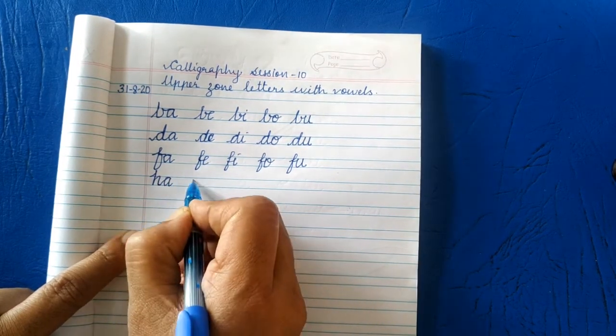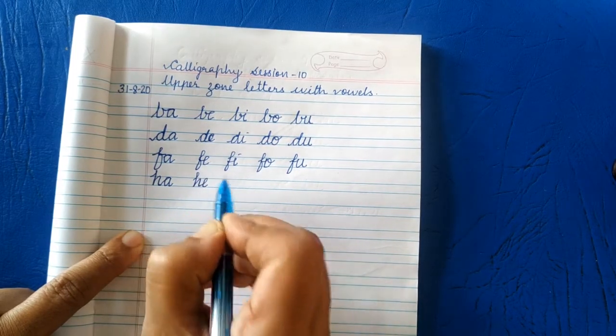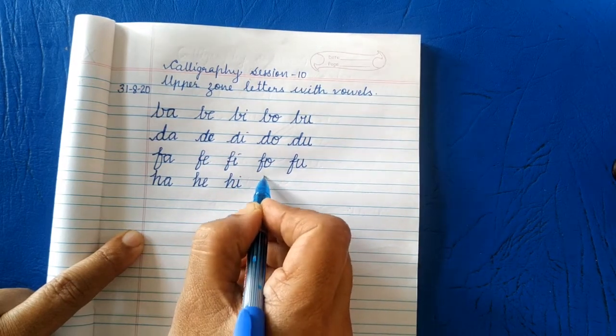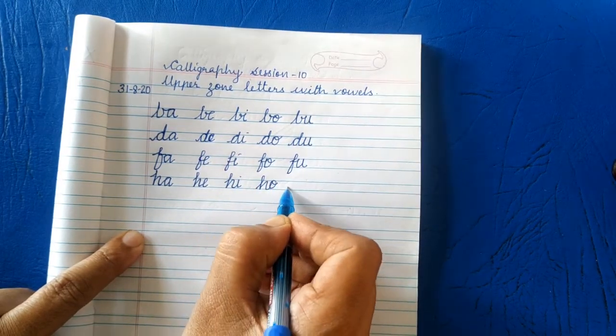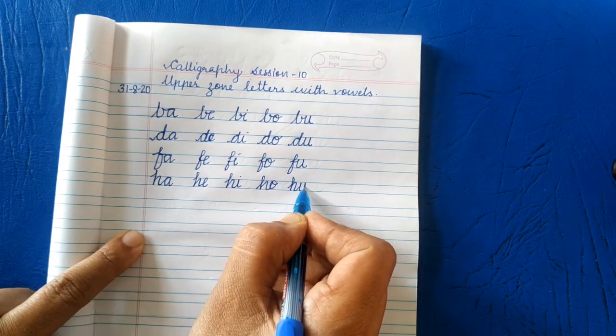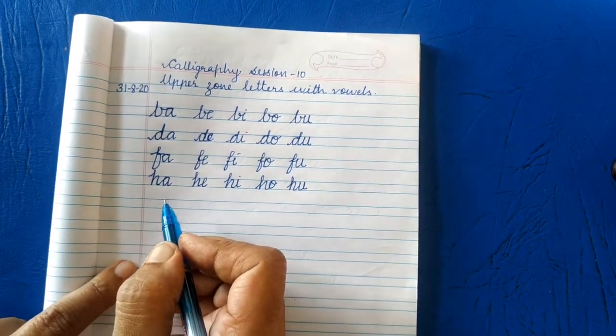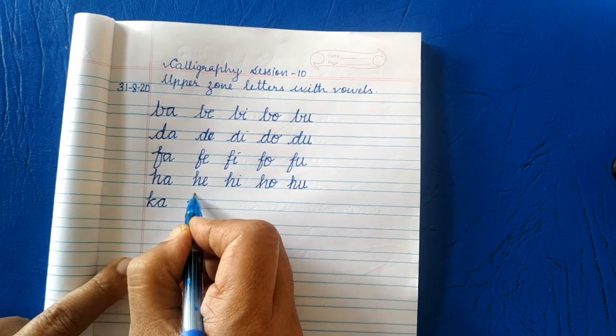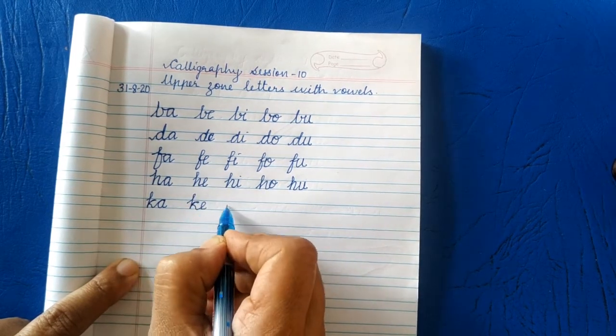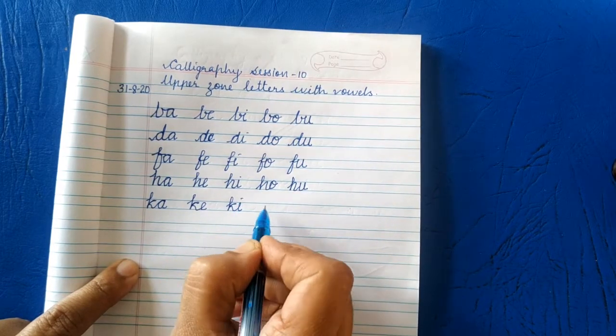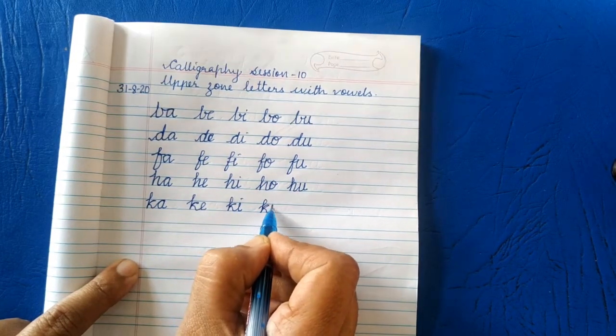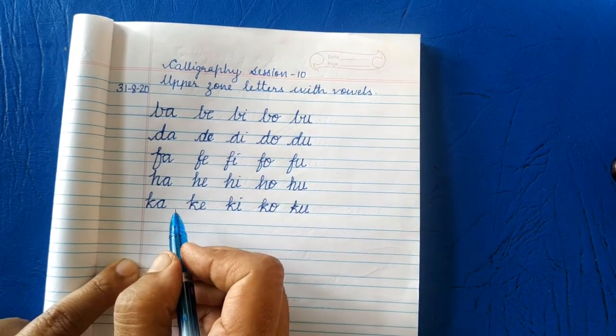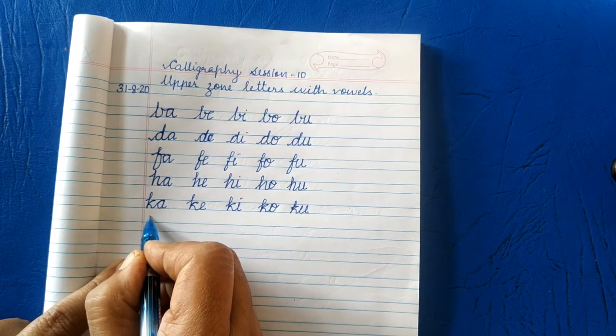Next letter is K, small K, KA, KE, KI, KO and KU. OK, next letter is L. Don't make a loop here.